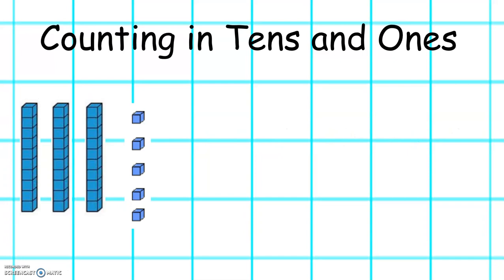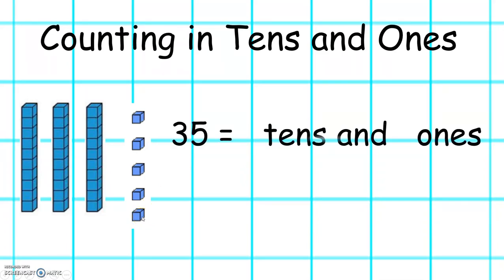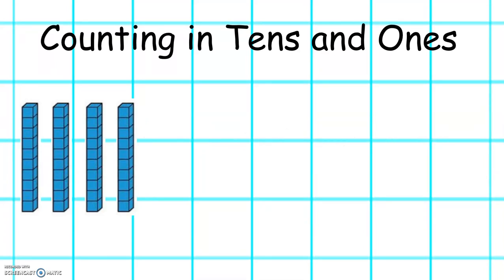Let's look at this number. We've got 10, 20, 30, 31, 32, 33, 34, 35. 35 equals — how many tens can you see? Well done. There are three tens. And how many ones can you see? Excellent. There are five ones. So 35 equals three tens and five ones.